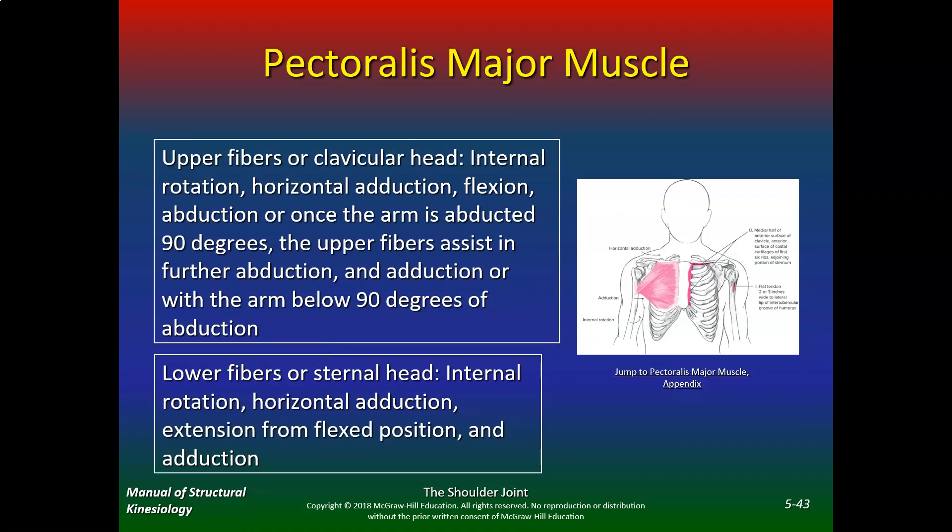Pectoralis major: the upper fibers or clavicular head do internal rotation, horizontal adduction, flexion, and abduction once the arm is abducted 90 degrees — the upper fibers assist in further abduction and adduction with the arm below 90 degrees. The lower fibers or sternal head do internal rotation, horizontal adduction, extension from a flexed position, and adduction.